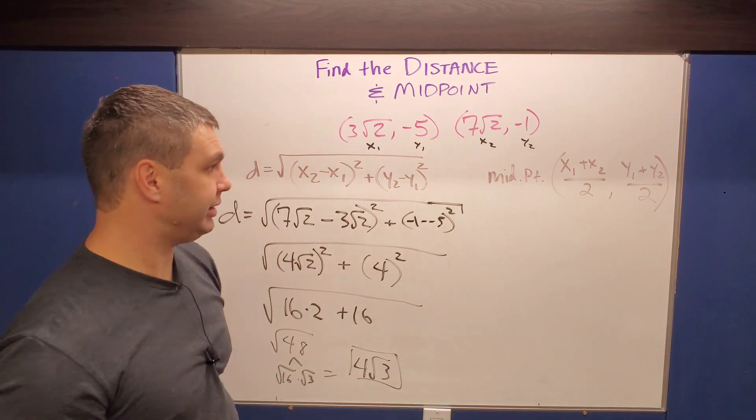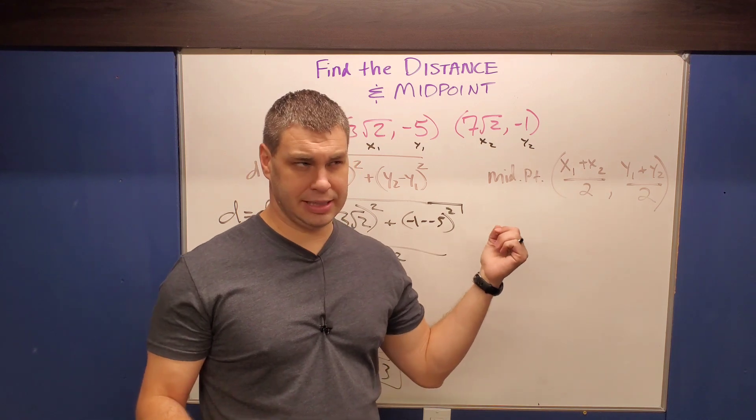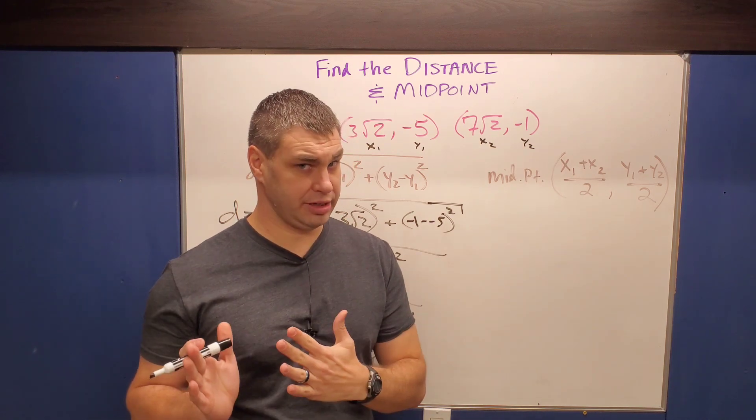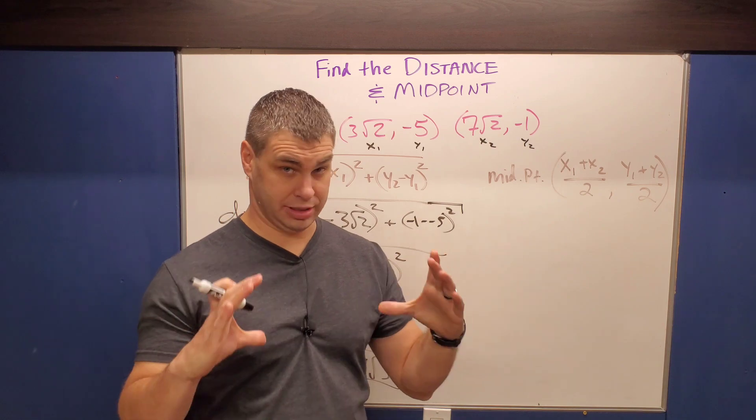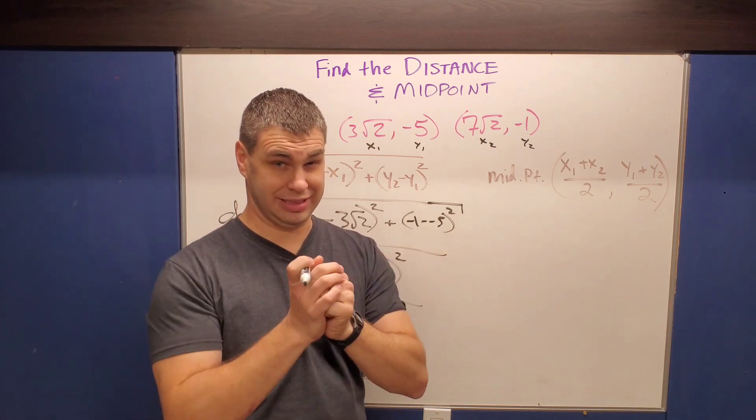All right, let's try the midpoint of those two points as well. Midpoints, you might just wanna think of this as the average of your X's comma the average of your Y's. You're gonna end up with another point, right? If you have two points, it's gonna be the point in the middle.